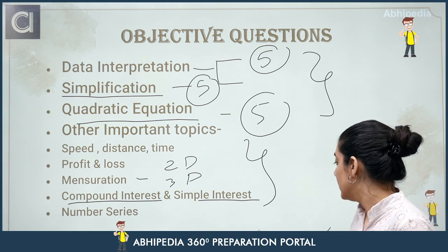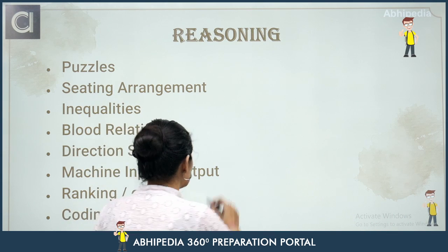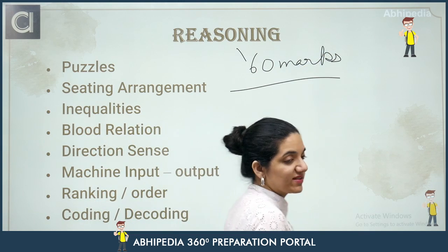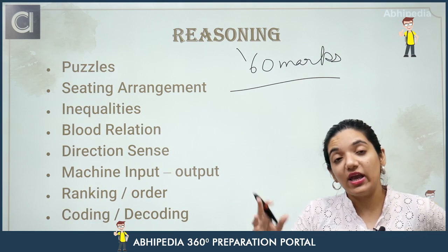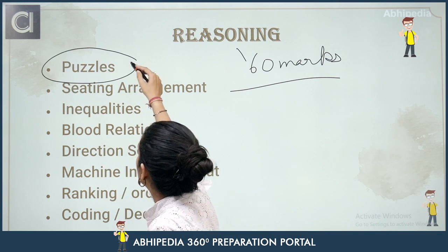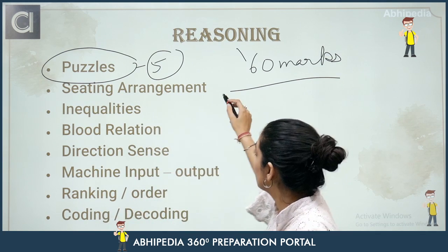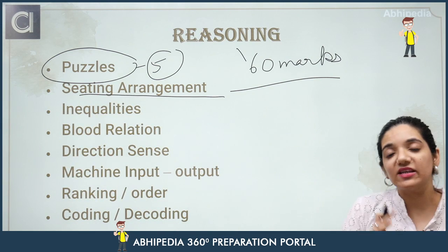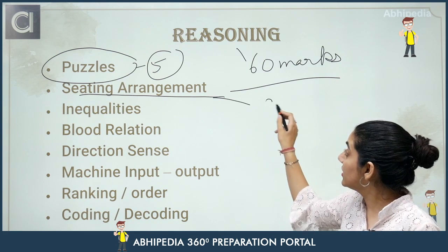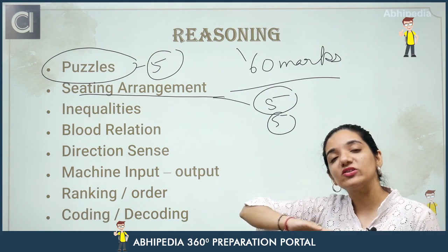After Quant (30 marks), let's move to Reasoning, which is of 60 marks. Reasoning can be your decision maker — whether you reach Phase 2 or not. In Reasoning, puzzles are always there, coming as sets of five questions. From last year's paper, seating arrangement had two different sets — single variable and double variable or even three-variable questions. If 10 questions come from seating arrangement alone, that's a huge coverage.